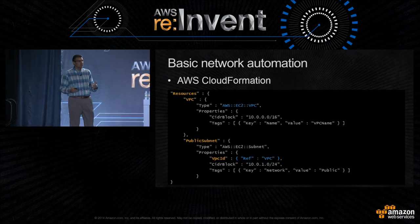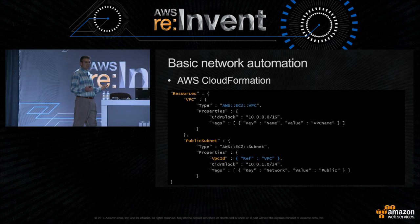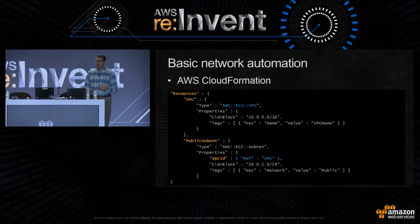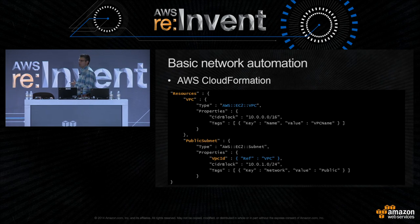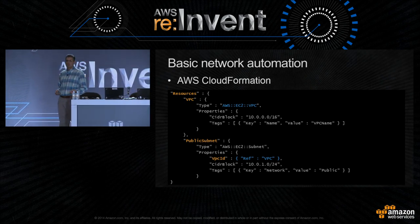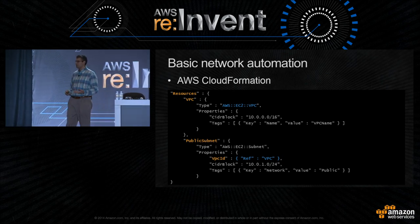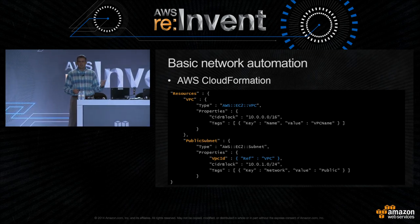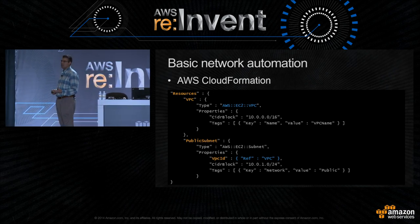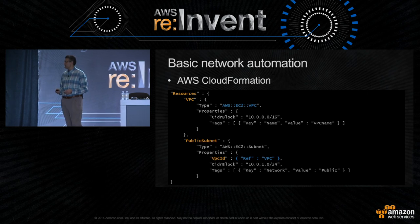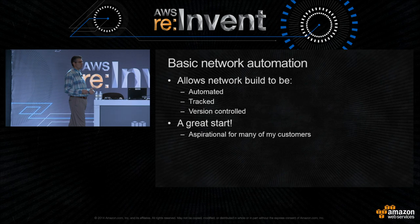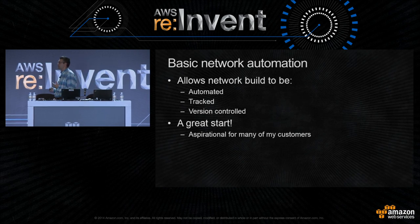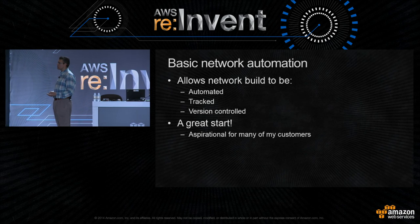You can also use CloudFormation, which allows you to define resources and automatically create them in the correct order. In previous script examples, you had to handle order manually — creating a VPC before a subnet, or deleting the subnet before the VPC. CloudFormation handles that automatically. Basic automation is great for automating your initial network build, version-controlling scripts, and tracking changes. However, for many customers this is just an aspirational goal — they use the console to manually create their network because networks aren't created all that often.